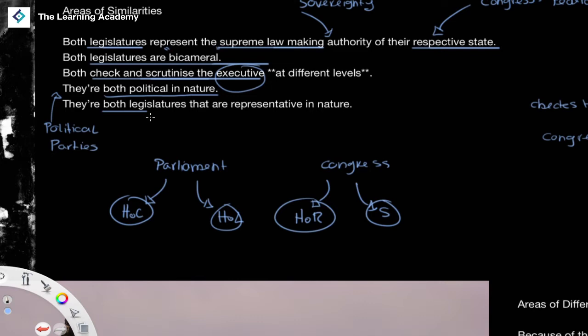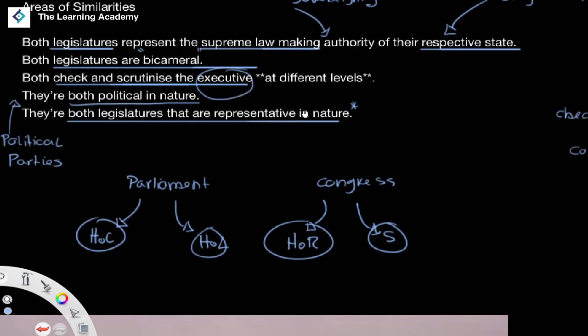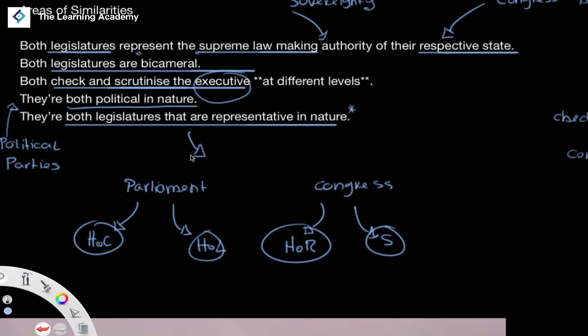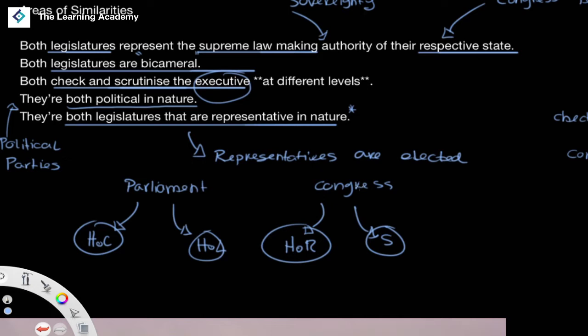Finally, they are both legislatures that are representative in nature — we elect representatives to these bodies. In the United Kingdom, we have elections to the House of Commons but not the House of Lords. In the US, you have elections to both the House of Representatives and the Senate. They are both representative, using representative democracy effectively.